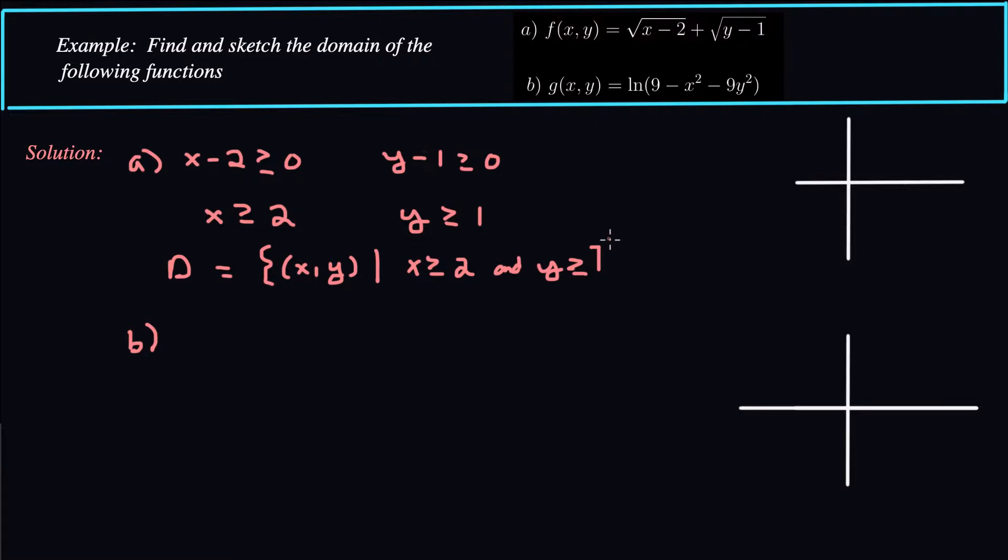So what are all those points in the xy plane? Well, if we graph some stuff over here, let's say 1 is like right here, and then 2 is about right there.